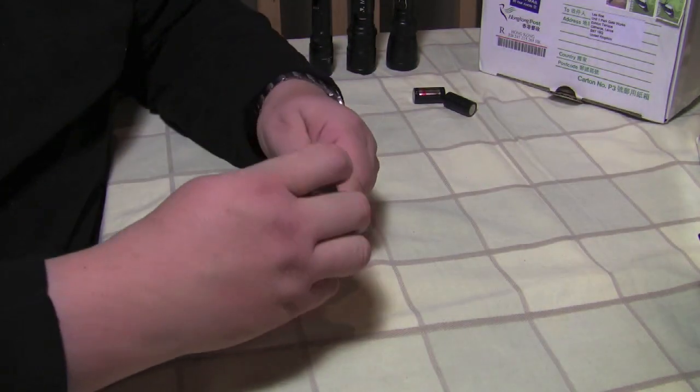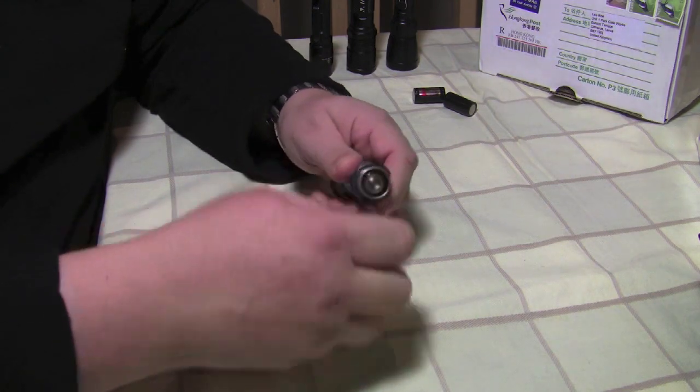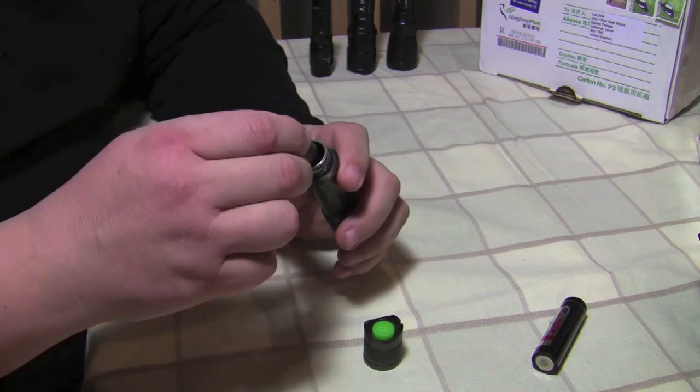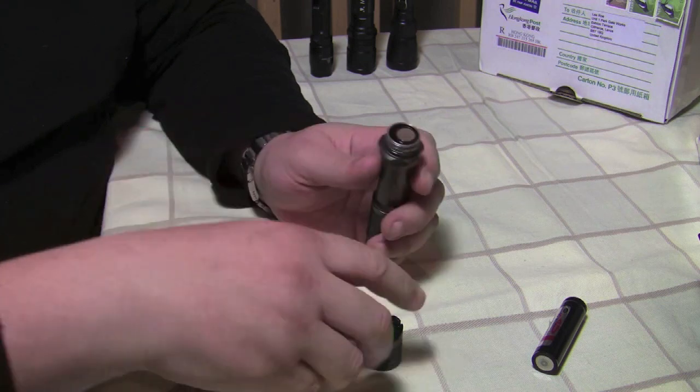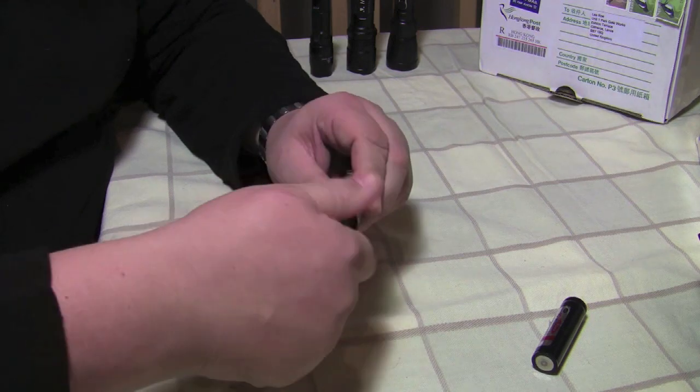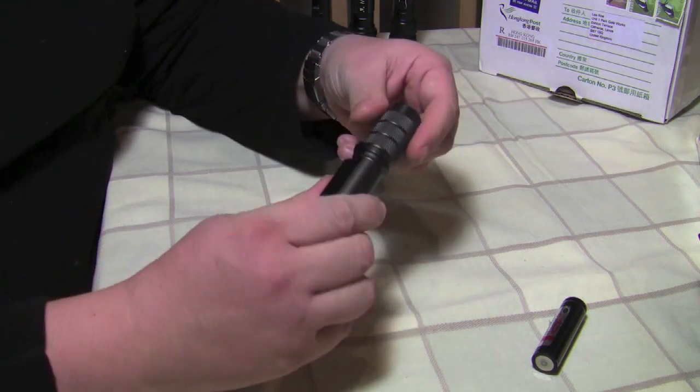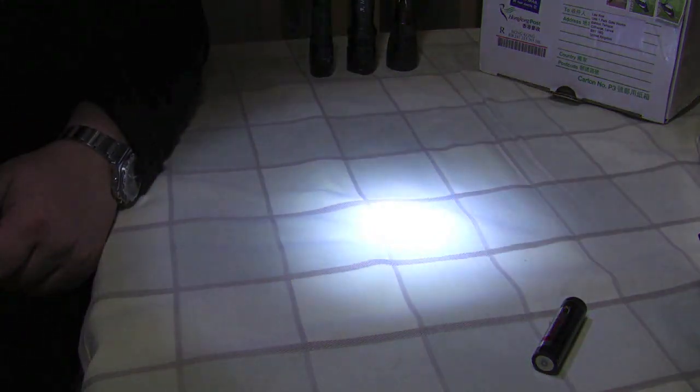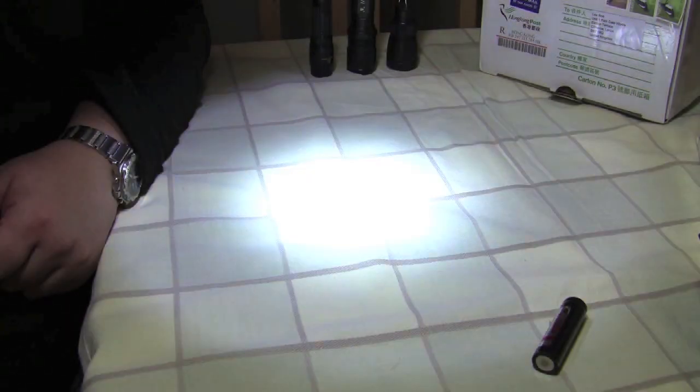If we now remove the tail cap and we're going to use two 16340s at 3.7 volts each just to show you. Put that back on, tighten up the head to go back into turbo mode and there as you can see full mode.